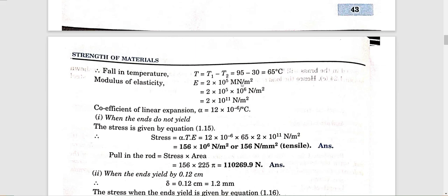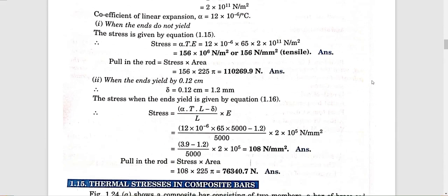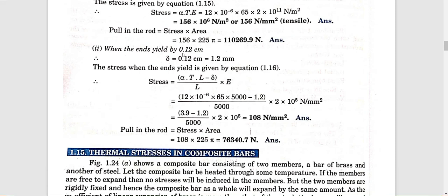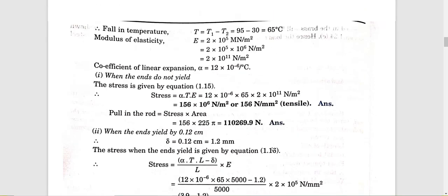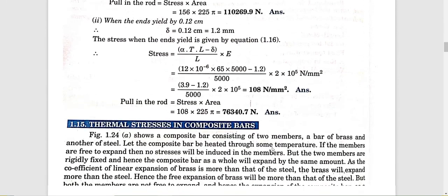E is equal to 200 GN per meter square and alpha is given. The stress is found using sigma equals alpha T E. Then the pull (load) is calculated as stress into area.